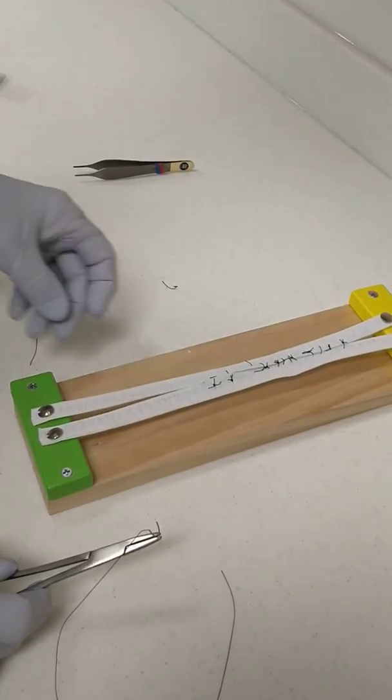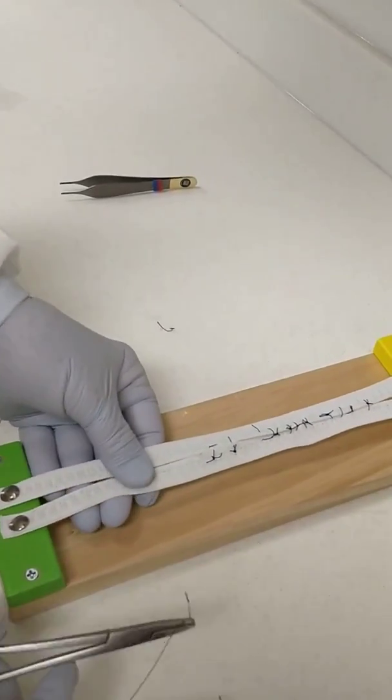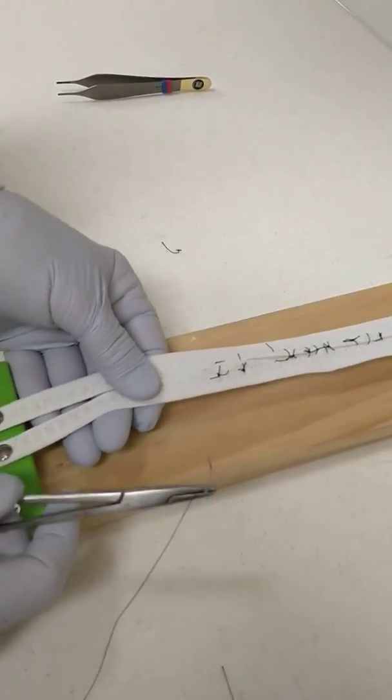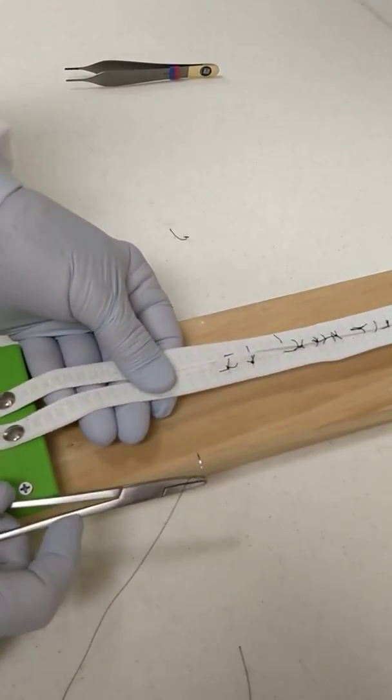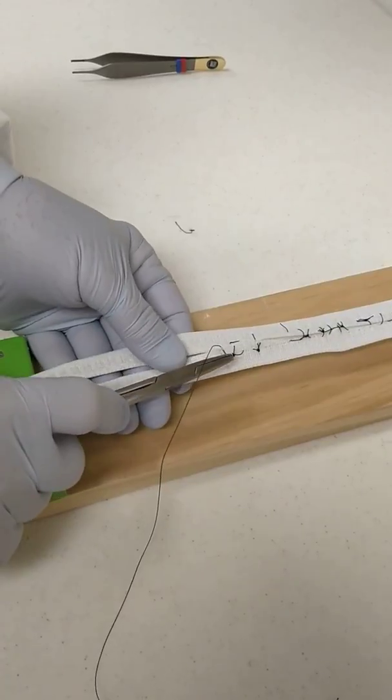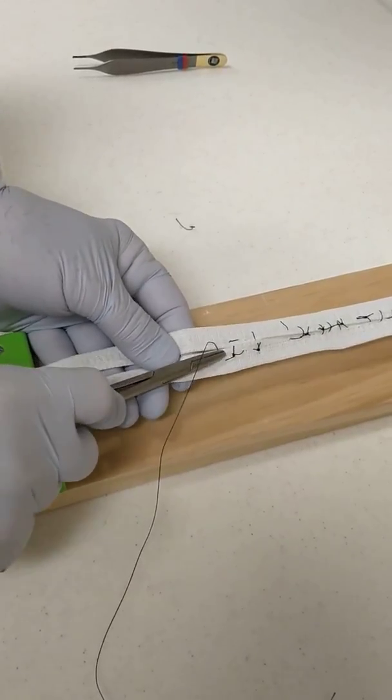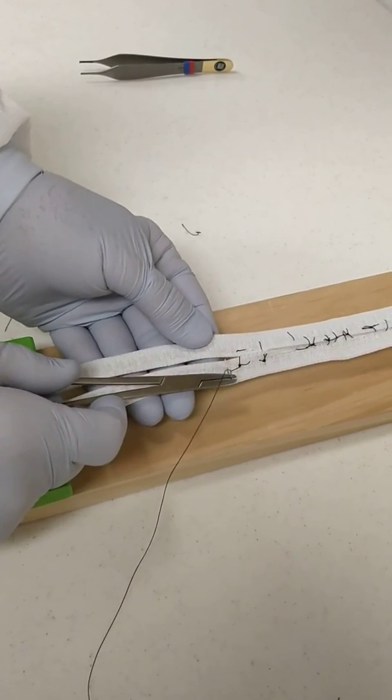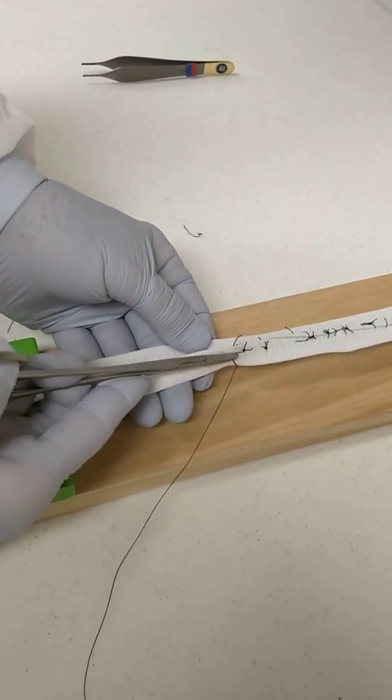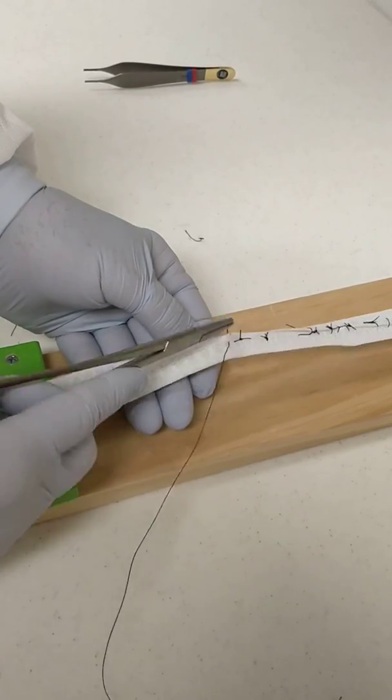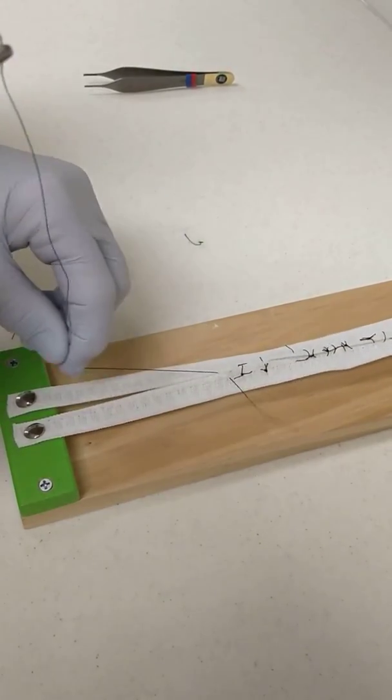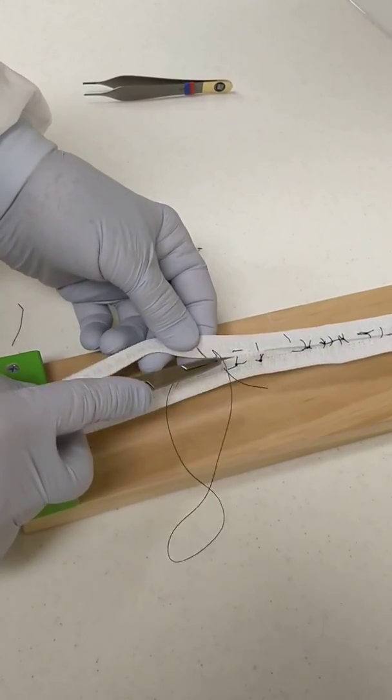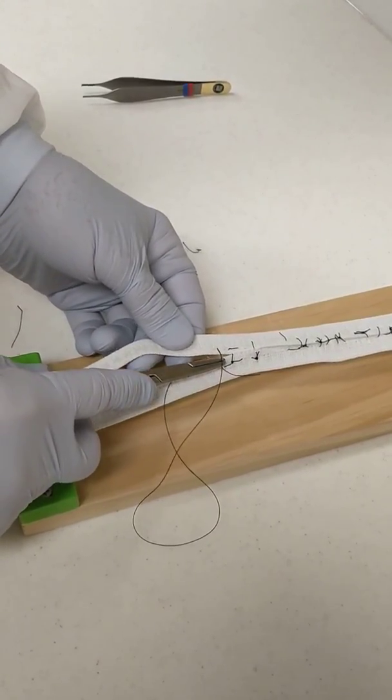A third type of suture that we often use when we're doing grafting of sockets is a figure of eight suture. This is done by passing the needle through the tissue, through one side, and going down one notch.